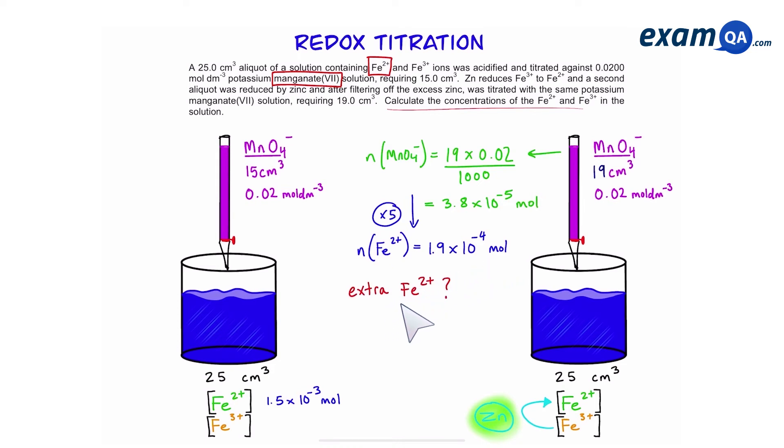You might be thinking, where did this extra 2 plus come from? On the left, we had 1.5 times 10 to the power of minus 3. How come we have 1.9 times 10 to the power of minus 4 on the right? Don't be worried about that. Remember, the extra 2 plus is simply from the 3 plus ions that have converted into 2 plus. We already had 2 plus, but now we have more because we've converted some 3 plus into 2 plus. We can simply subtract the difference, and that will give us the moles of iron 3 plus.